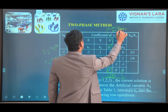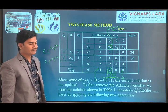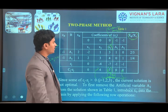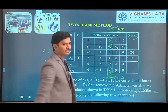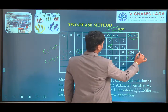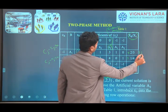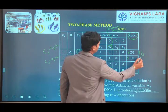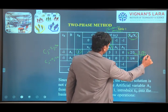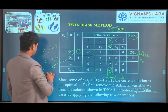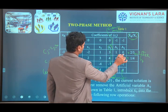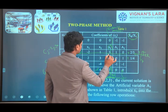Next, we identify the key row using the minimum ratio test. The minimum ratios are calculated from the key column and basic variable solution values: 2/3 and 1/4. The minimum is 1/4, so the second row is the key row, and a2 is the leaving variable. The intersection of the key row and key column gives the key element, which is 4.